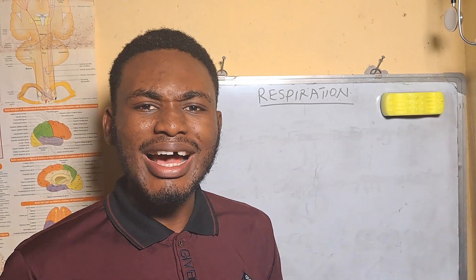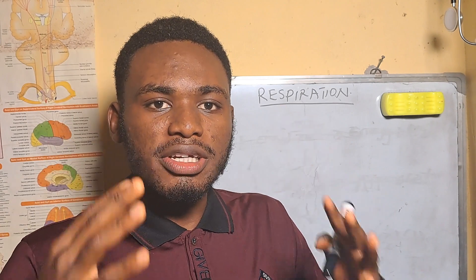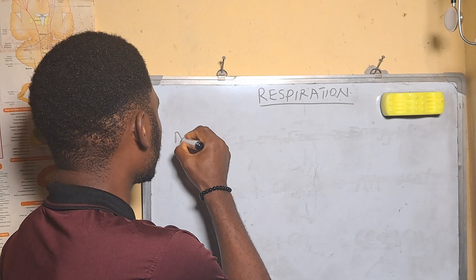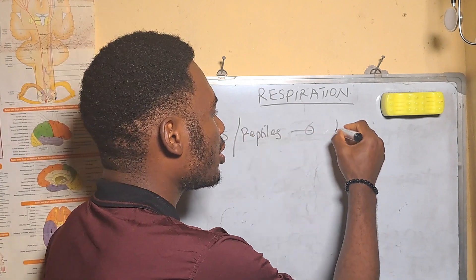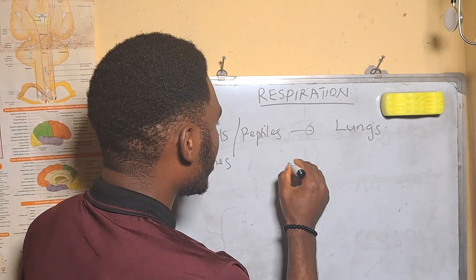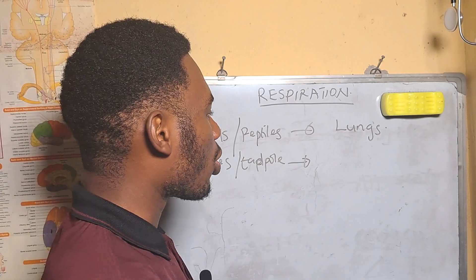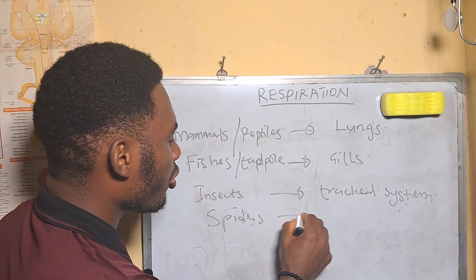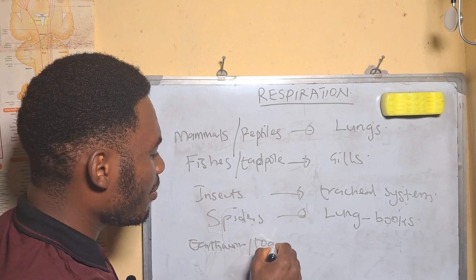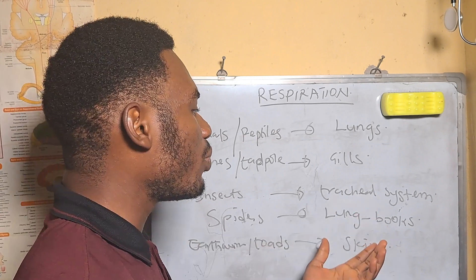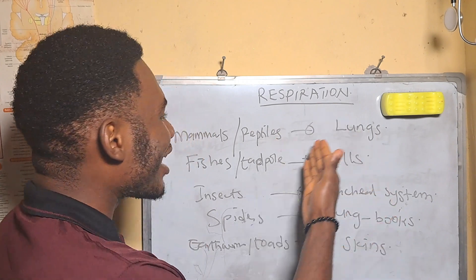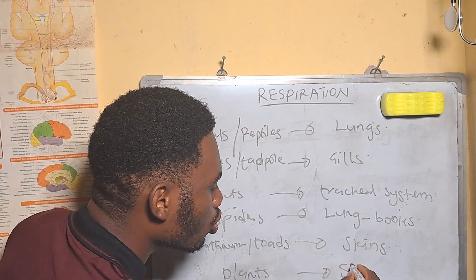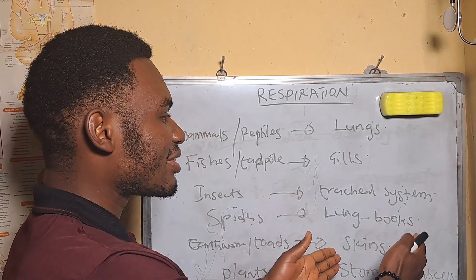Living organisms have different respiratory structures or organs that carry out the function of respiration. For example, mammals and reptiles respire by an organ called the lungs. Fishes and some tadpoles respire by an organ called the gills. Insects respire by the tracheal system, spiders respire by book lungs, and earthworms and some amphibians like toads respire by means of their skin.